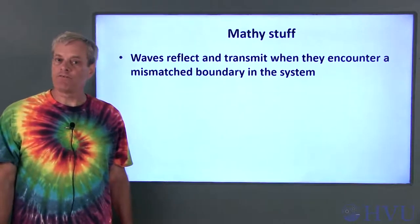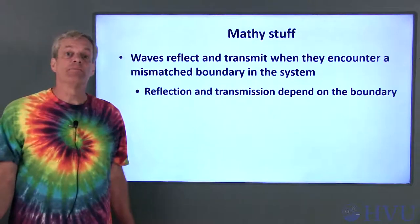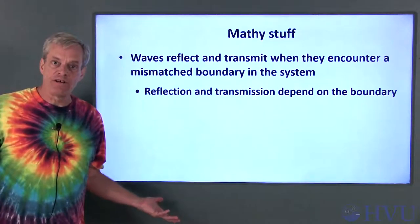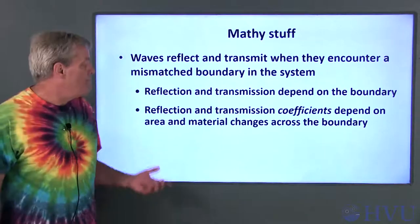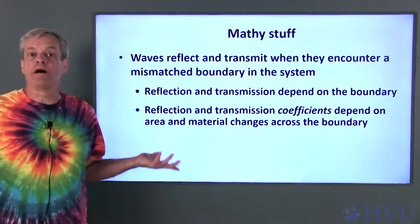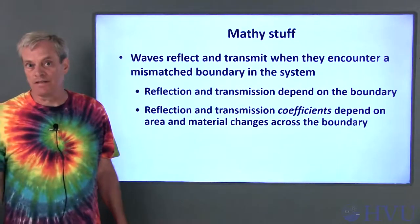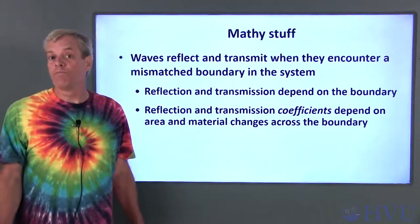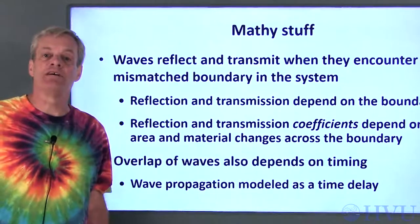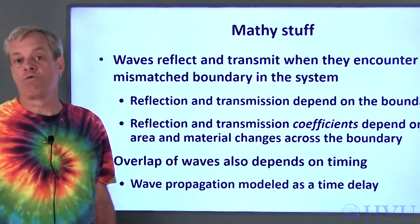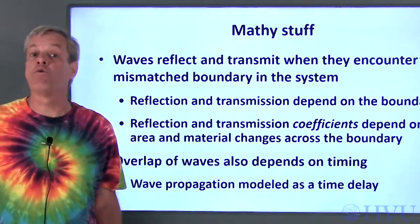When you propagate waves into some material, they reflect from and transmit through boundaries or different layers in the material. The amount of the wave that's reflected and transmitted depends upon the type of the boundary. Mathematically, these effects are modeled by reflection and transmission coefficients, which depend on things such as changes in area or material properties between layers. Another important effect is the timing of when waves are arriving or leaving these boundaries, which helps us know which waves are overlapping.